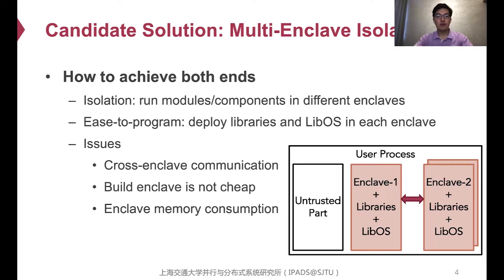A natural question is: can we achieve the advantages of both high security and ease of development? One candidate solution is multi-enclave isolation. Some prior efforts have deconstructed a program into different enclaves, while the needed libraries and library OS are deployed in each enclave. But such a solution faces the overhead of cross-enclave communication, and the overhead of enclave construction may sometimes degrade the overall performance.